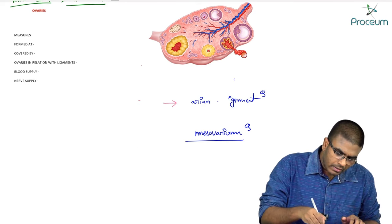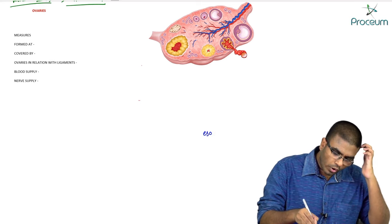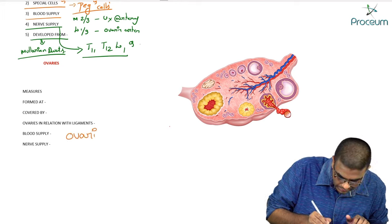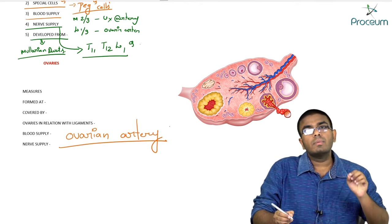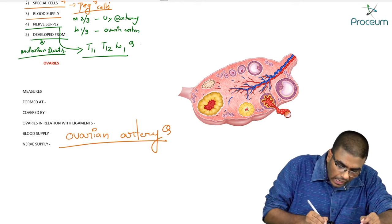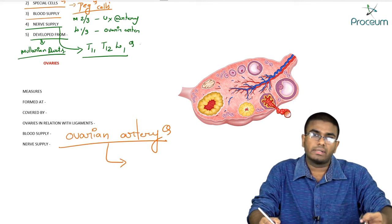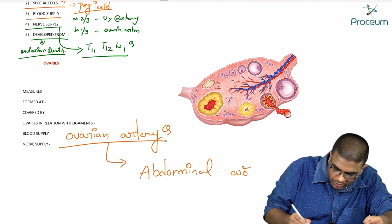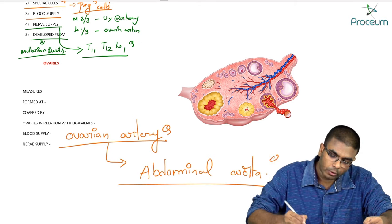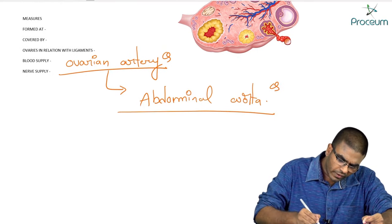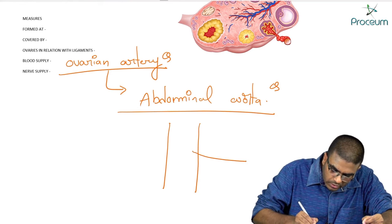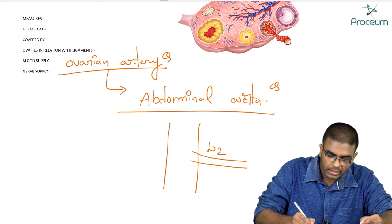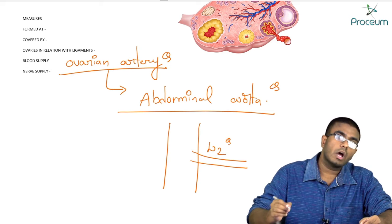The blood supply of the ovaries comes from the ovarian artery. The uterine artery is a branch of the anterior division of the internal iliac artery, whereas the ovarian artery is a branch of the abdominal aorta — a super important MCQ. The ovarian artery arises from the abdominal aorta at the L2 level.